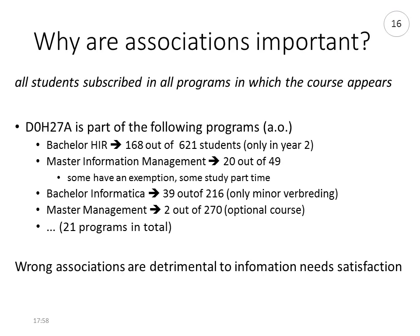The course is also part of the Master of Information Management, but only 20 out of 1,949 students follow that class because some have exemptions and some study part-time. Similarly, for Bachelor Informatics, only approximately 40 out of 200+ students follow the class, and for the Master Management only two students chose it as an optional course. So the non-availability of the gray link going directly from course to students clearly hampers the satisfaction of the need to know how many students are subscribed in the course. Wrong associations or missing associations are detrimental to information need satisfaction.